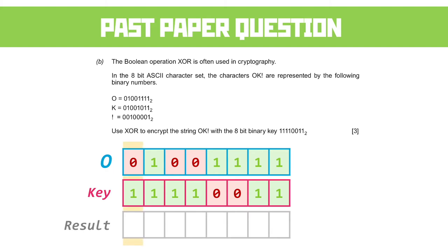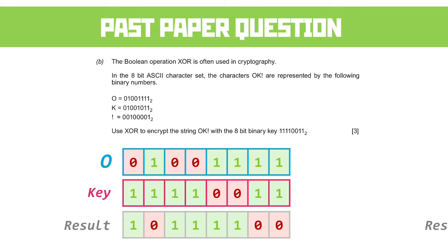Our first column XOR produces 1 because they're different. Our second column XOR produces 0 because they're the same. Then we've got a difference, so it's a 1; a difference, so it's a 1; a difference; a difference. And then the last two are the same, so we get 0s. That's our ciphertext — that's our encrypted data.